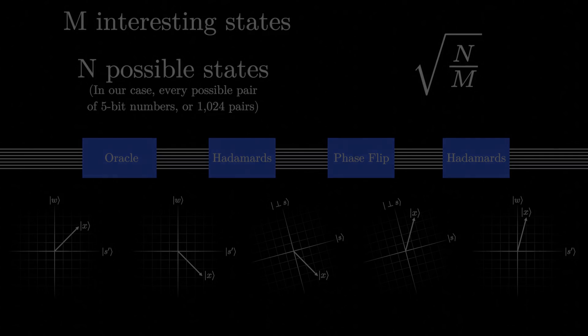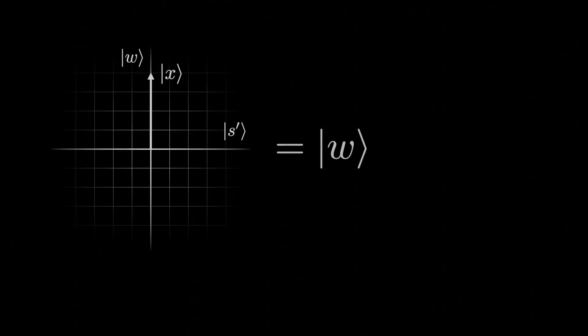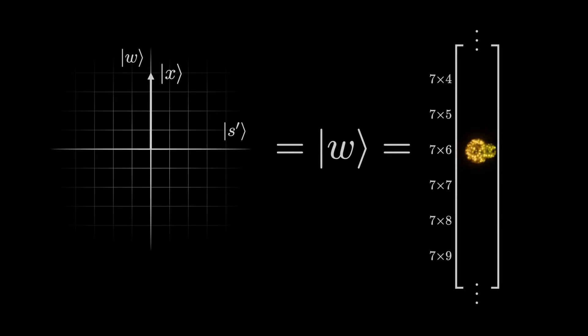Finally, we have completed our algorithm. By applying the steps of Grover's algorithm 10 times, we will produce an entangled system of qubits which are likely to be observed as representing numbers that multiply to 42.